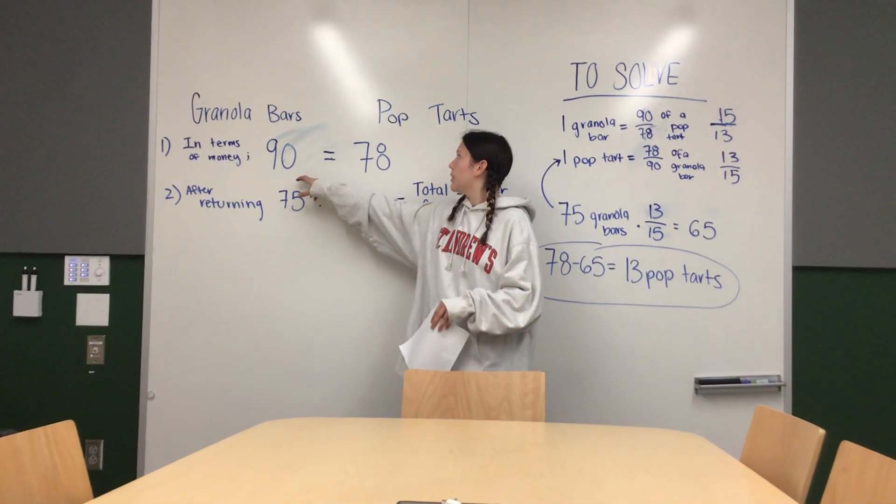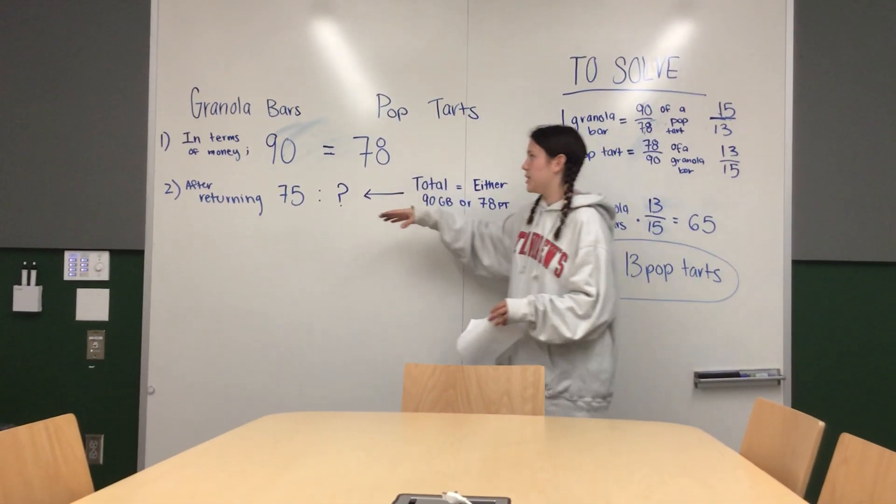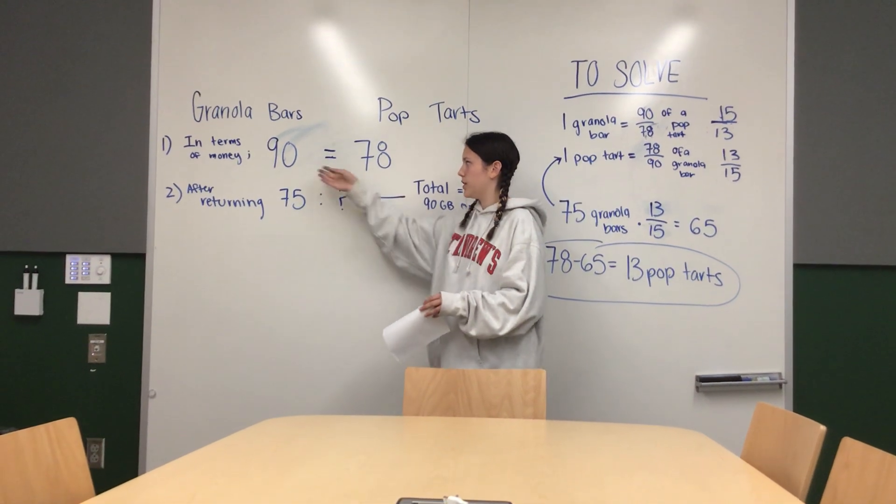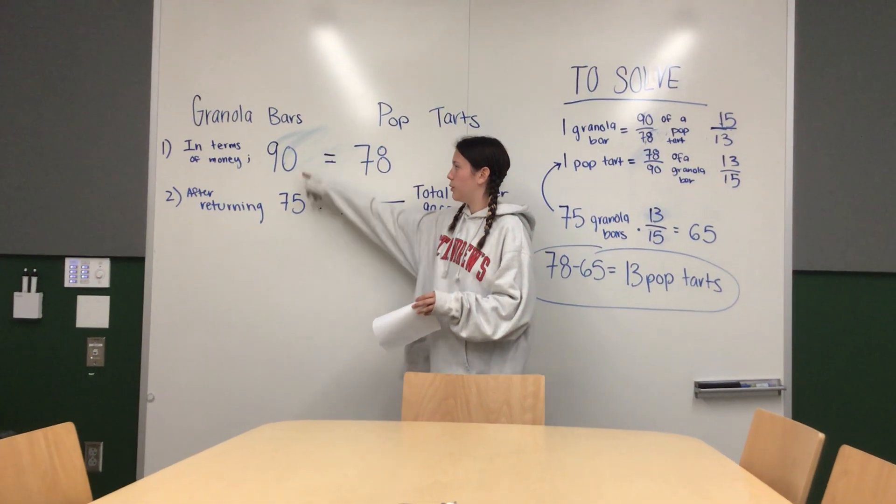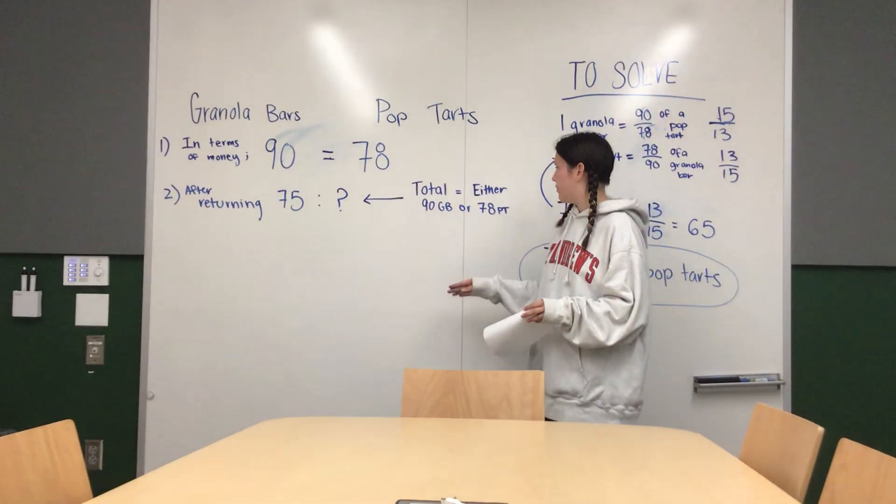So we know that 90 granola bars is equal to 78 Pop-Tarts because she can buy either or, so they're the same amount in monetary value. And after returning from the store, she has 75 granola bars, so it's like a fraction of that.